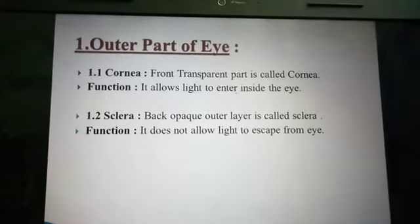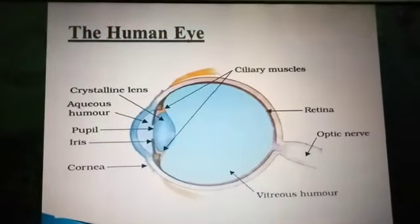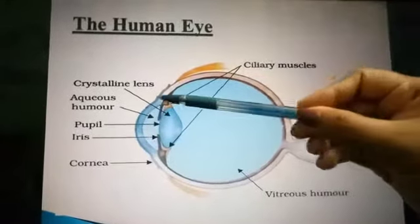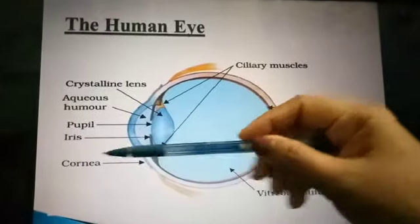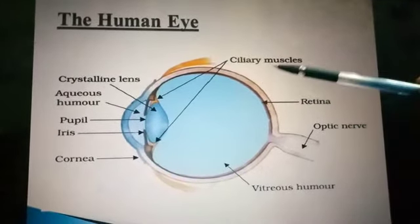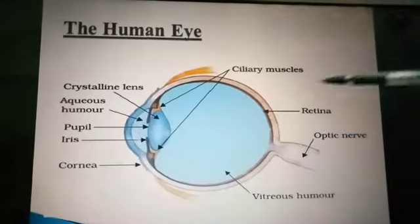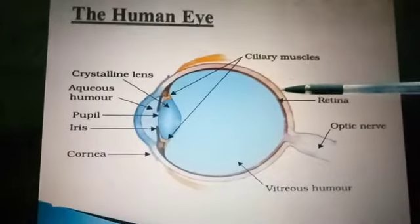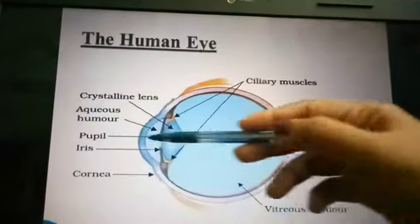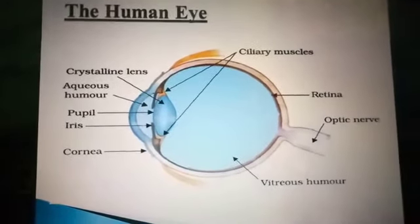The sclera does not allow light to escape out from the eye. Relating this to the diagram: the front portion is the cornea, and the outermost back portion is the sclera. The cornea allows light to enter into the eye, and the sclera prevents light from going outside. So the cornea is the front portion and the sclera is the back outer portion.